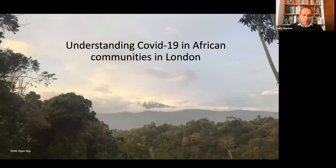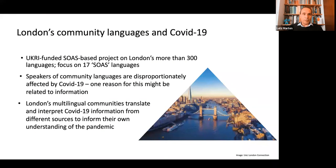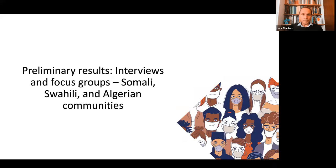My second case study is a project we've done here on COVID-19. The project looked at around 15 languages overall, but I'm focusing on three African language communities: the Algerian community, the Swahili community and the Somali community. This is a UK government-funded project. We focused on 17 languages because speakers of community languages are disproportionately affected by COVID-19. We focused particularly on London because London is extremely complex in terms of linguistic diversity.